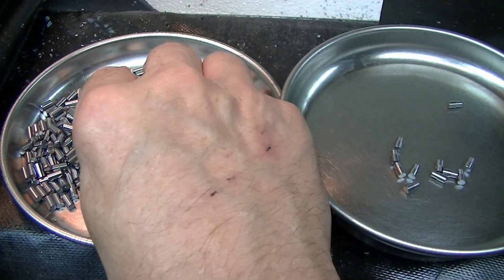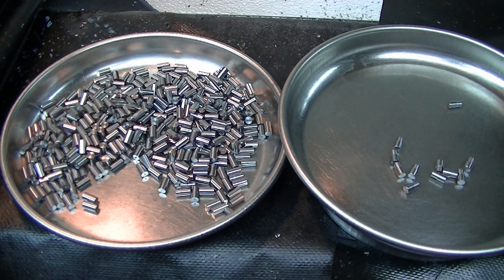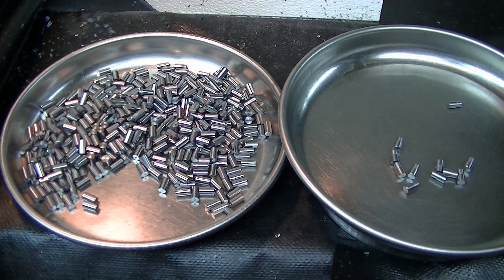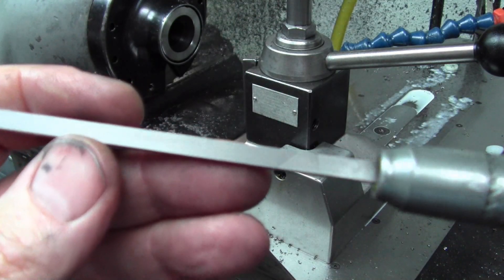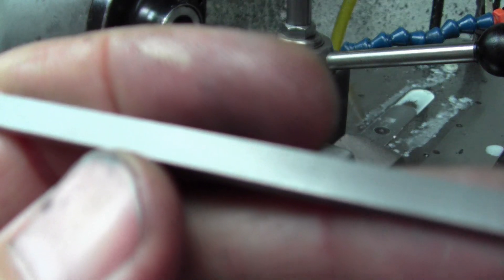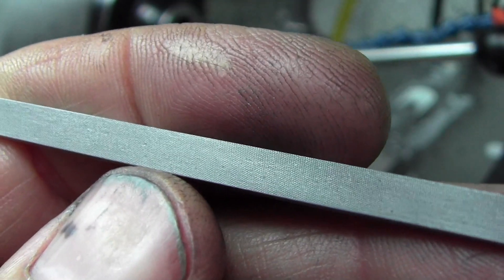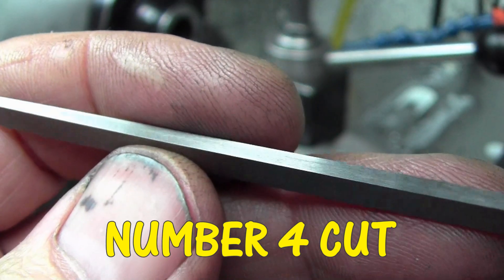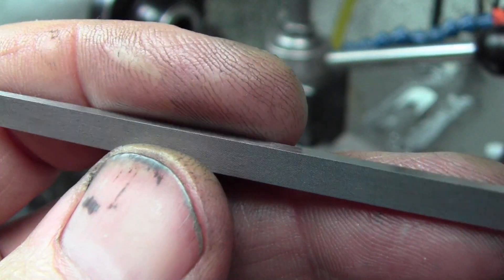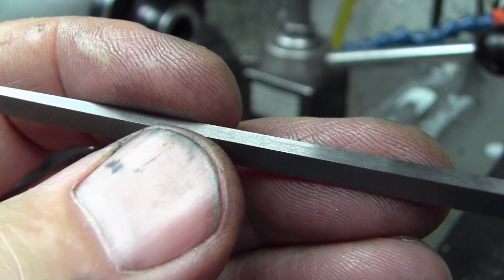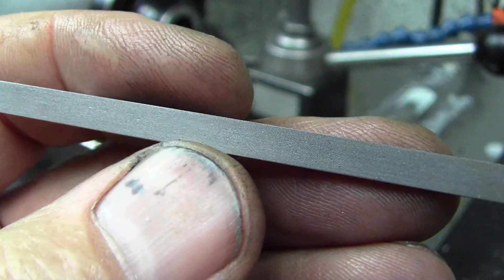These are the ones that are parted off and chamfered. These are the ones that just got the turn diameter and the drill point. Here's the file we were using to just break the burr on the edge of the parts there. This is a pillar file, and then I actually surface ground the edges of these to get down to just a very light break edge left on here.